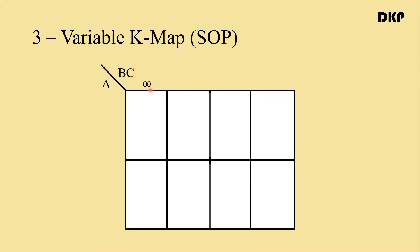The second column is 01, where 0 denotes B bar and 1 denotes C, so it represents B bar C. Similarly, the third column is 11 representing BC, and the fourth column is 10 representing B C bar. You can notice that these binary values are not placed in the standard order 00, 01, 10, 11 — instead I have placed 11 in the third column and 10 in the fourth column. This is because the min terms or max terms in adjacent cells should differ by only one variable.